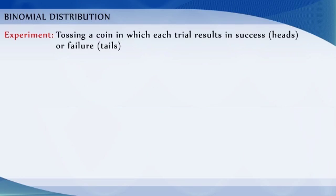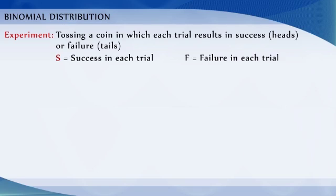Binomial distribution. Consider the experiment of tossing a coin in which each trial results in success, say hits, or failure, fails. Let S and F denote respectively success and failure in each trial.